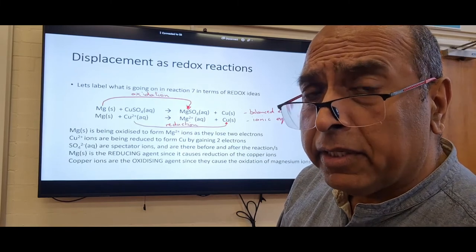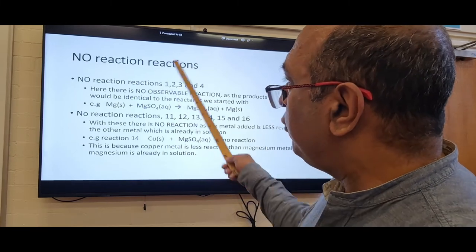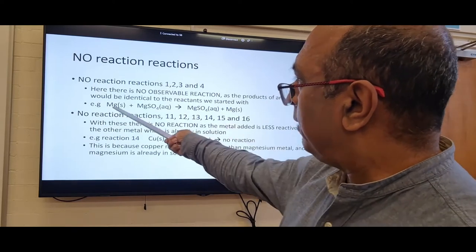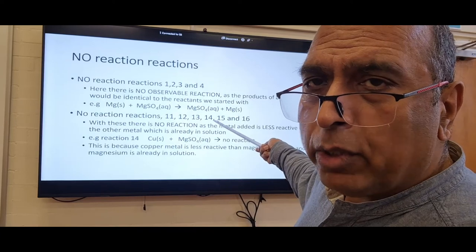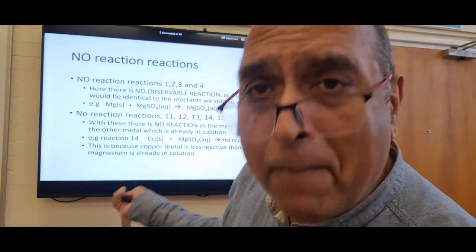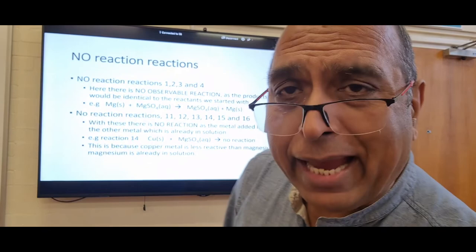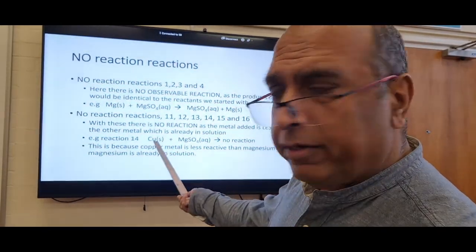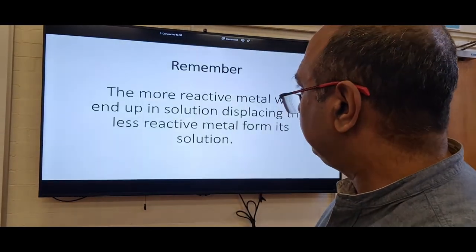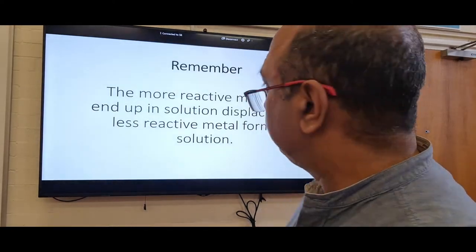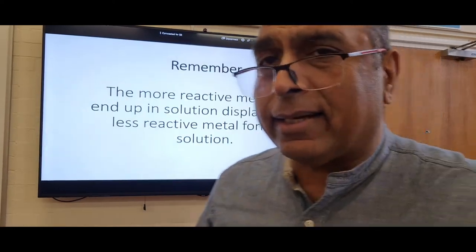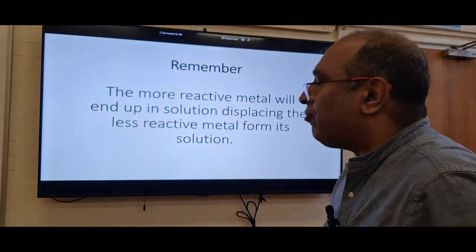No-reaction cases: either there's no reaction because what you make is exactly the same as what you started with (e.g. magnesium with magnesium sulfate), or there's no reaction because the metal is less reactive and not reactive enough to displace the other. For example, copper is not reactive enough to push out magnesium. Remember: the more reactive metal ends up in solution, displacing the less reactive metal from its solution.